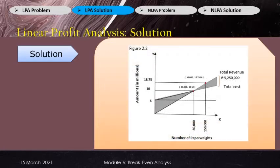As shown in graph number 2, when the company sells 150,000 units, it earns a profit of 5,250,000 pesos, because total revenue of 18,750,000 pesos exceeds the total cost of 13,500,000 pesos. So to answer the questions under problem 1: the break-even point is 80,000 units and the profit is 5,250,000 pesos.